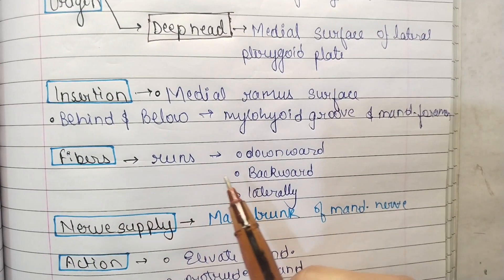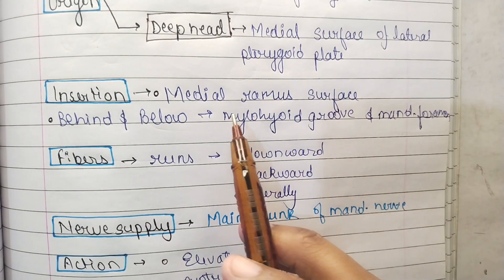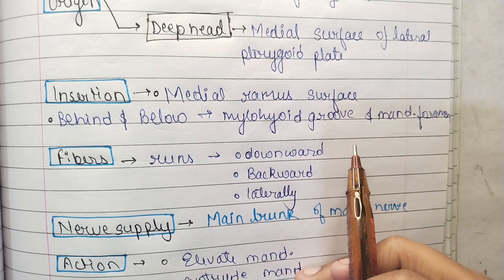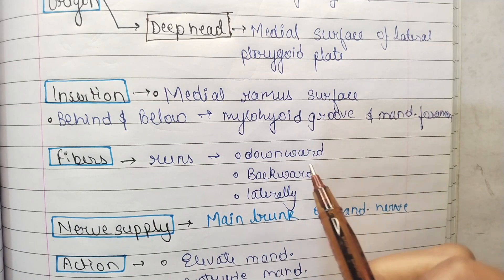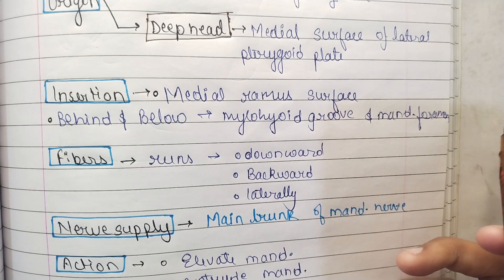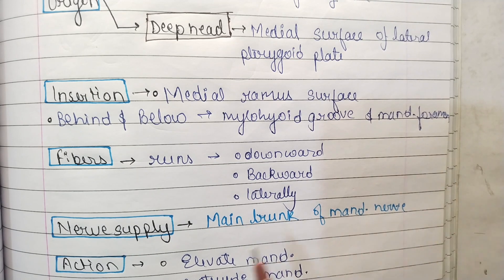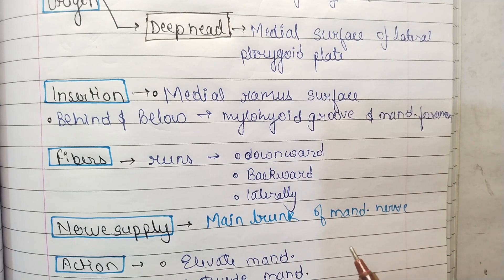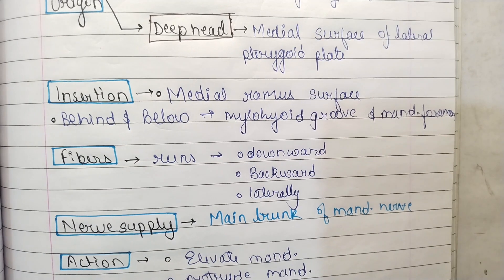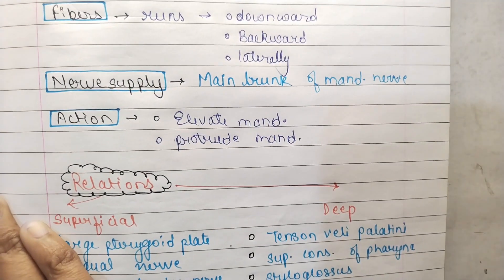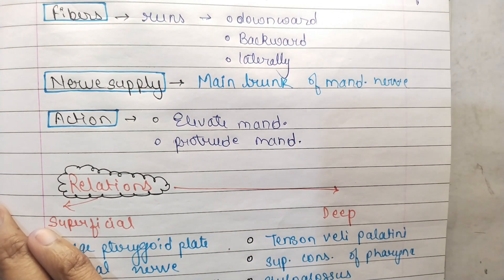Coming to the insertion — it inserts into the medial surface of the ramus, behind and below the mylohyoid groove and the mandibular foramen. The fibres run downward, backward, and laterally. The nerve supply is from the main trunk of the mandibular nerve.